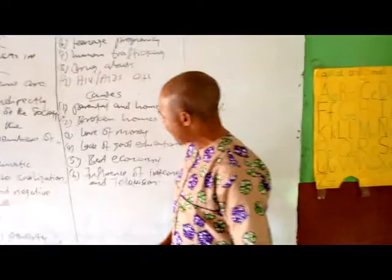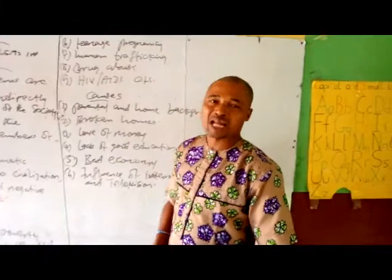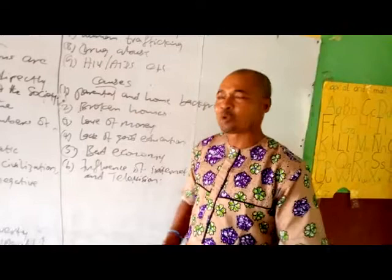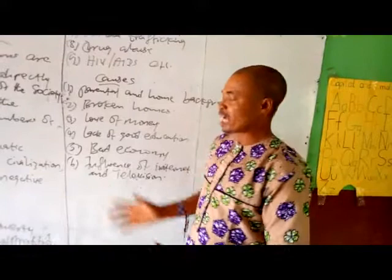Number five: bad economy. Everybody knows that the economy is bad today. There are so many graduates who have not gotten a job, and even some who have gotten a job are not well paid — they are underpaid. Because of that, so many of them want to live a good life and satisfy themselves, and they get involved in illegal activities to make money or to satisfy their needs.